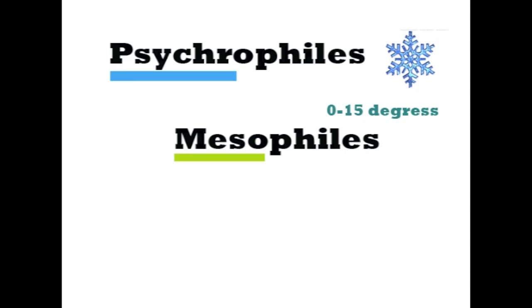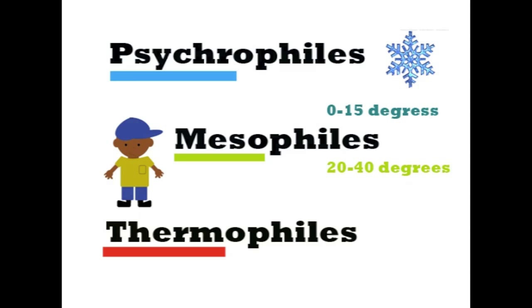Trying to remember these, look at the root word. Like meso, that reminds you of middle, so you think of middle temperature things like human beings. And thermo reminds you of thermostat, like the thing that keeps you hot.